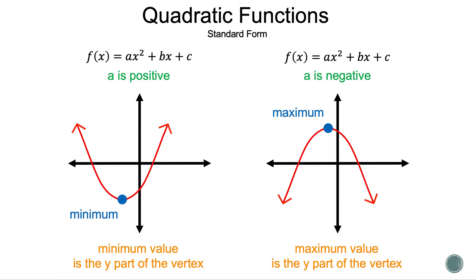Now let's talk about how do we know if there's a minimum or maximum value. When a is positive, we will have a u-shape, since all the output values will be positive, so the graph will go up. So there will be a minimum value, which is the y-part of the vertex.